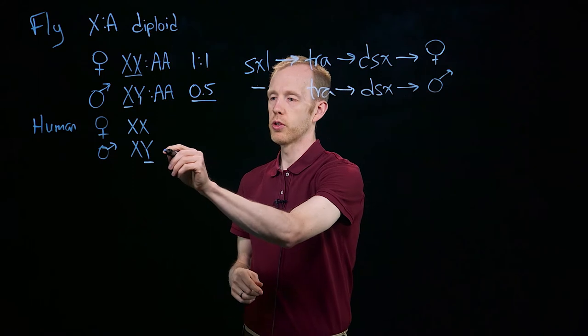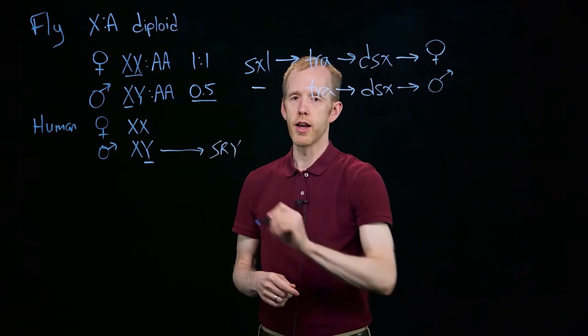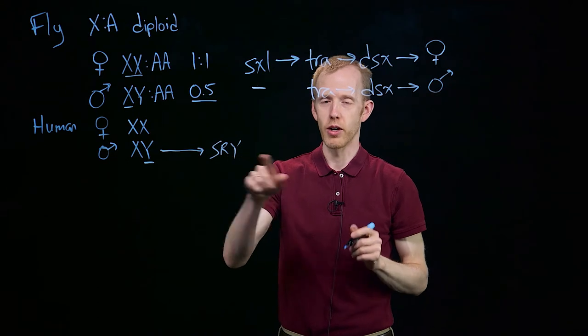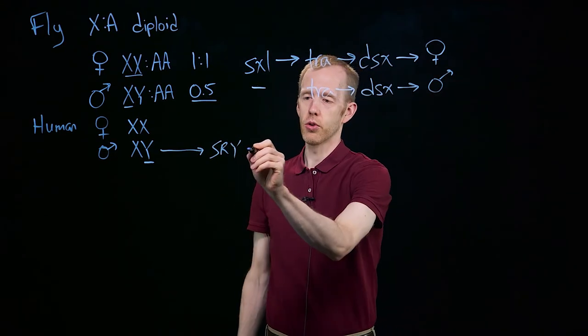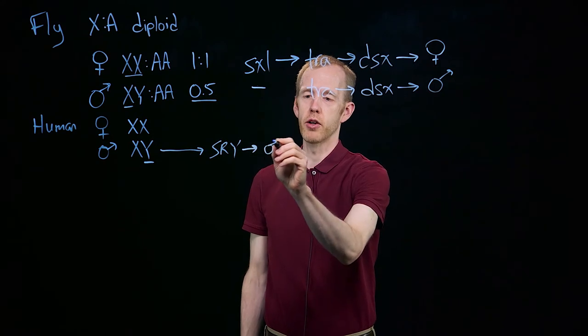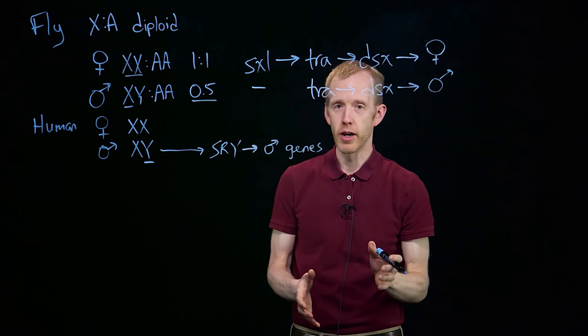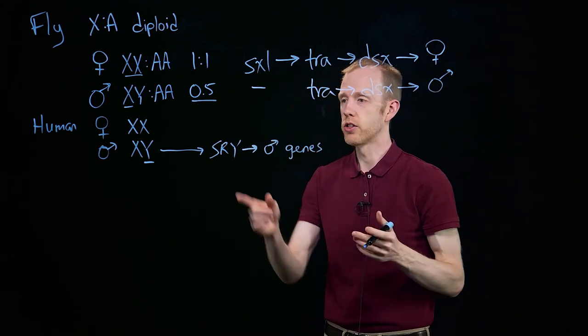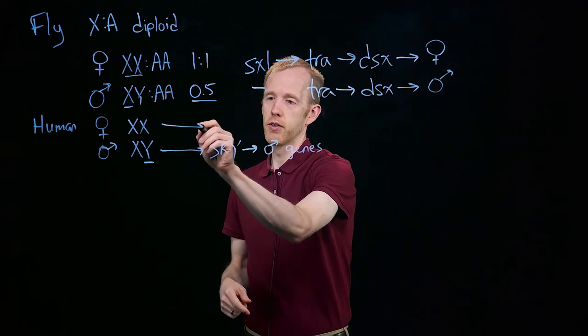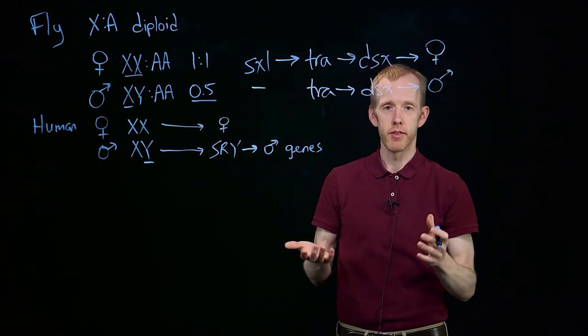So if you have a Y chromosome, it contains a gene called SRY, for SOX9 related on the Y chromosome. Don't need to memorize that. And it controls the expression of male-specific genes. If you don't have a Y chromosome, then you don't have the SRY gene, and so XX individuals don't turn on male development genes, they become female.